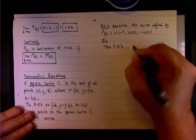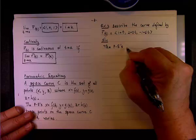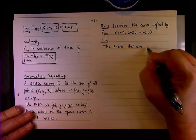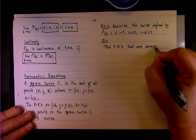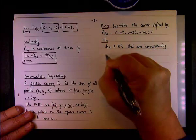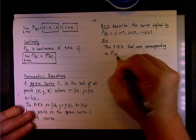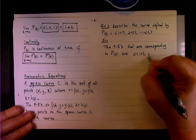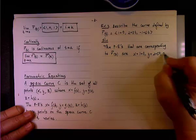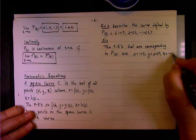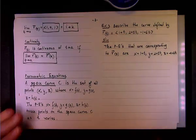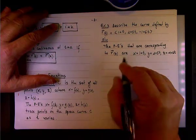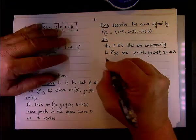And if you think about it, what are the corresponding parametric equations that are corresponding to r(t)? They are x equals 1 plus t, y equals 2 plus 5t, z equals negative 1 plus 6t. Just squeeze it in, okay?